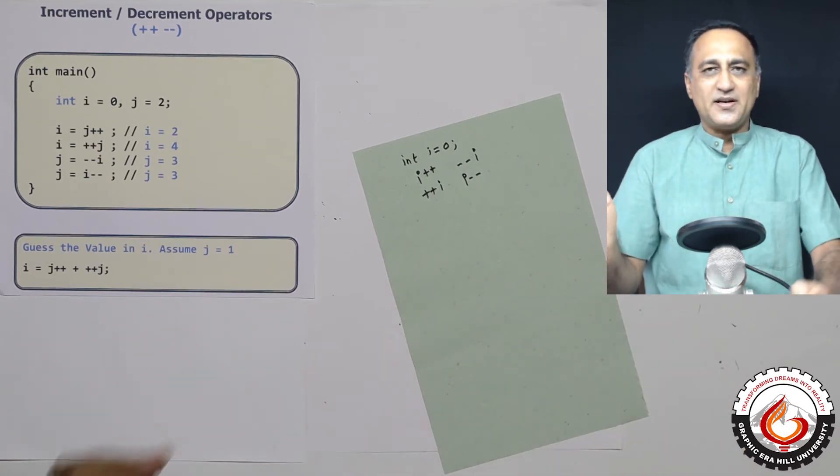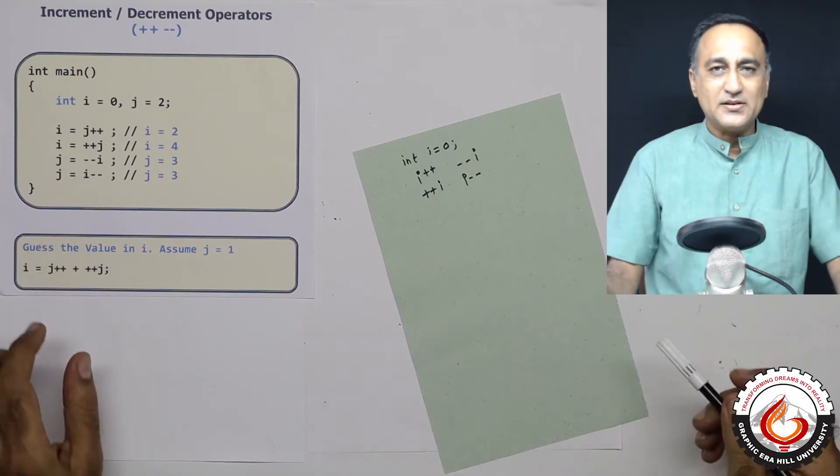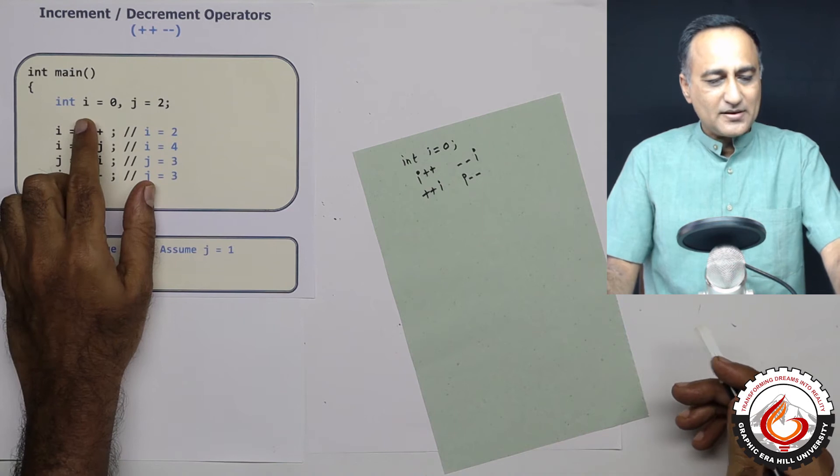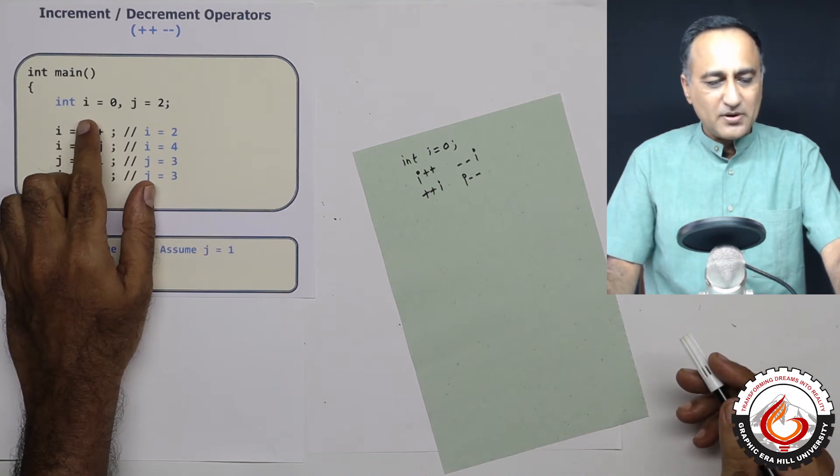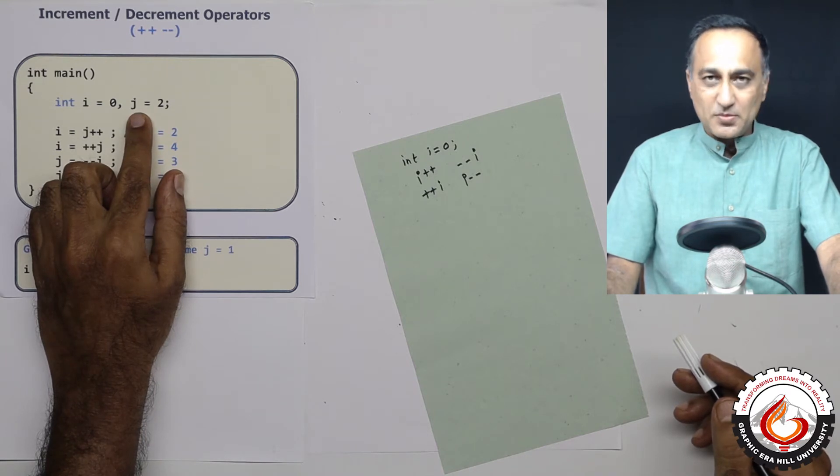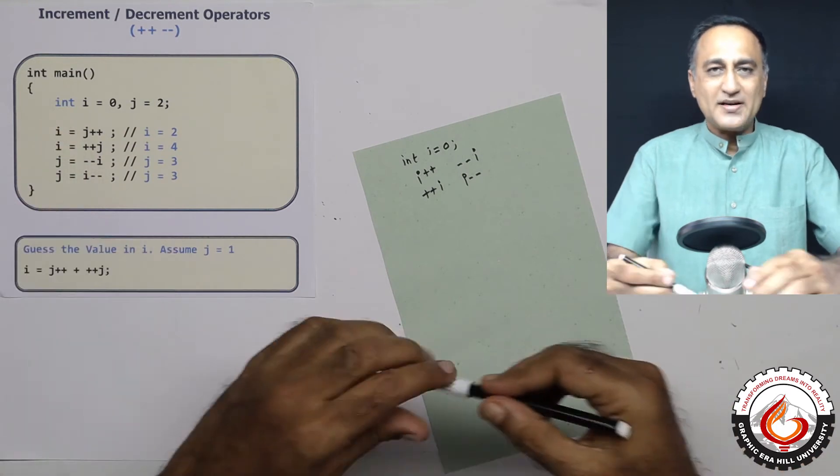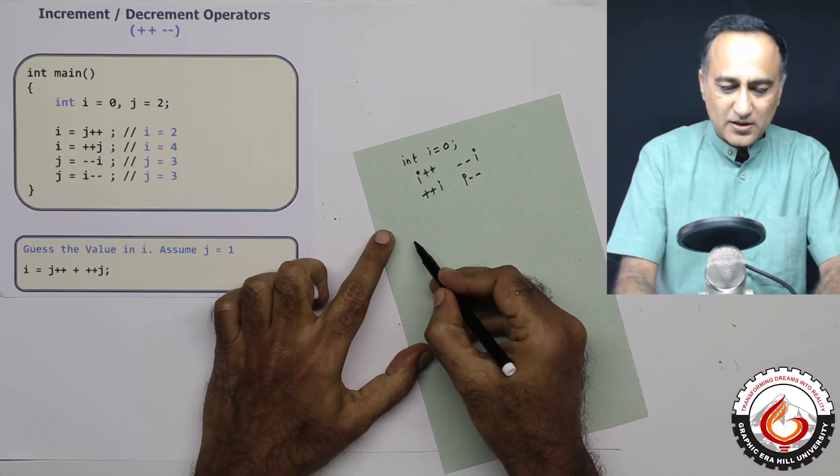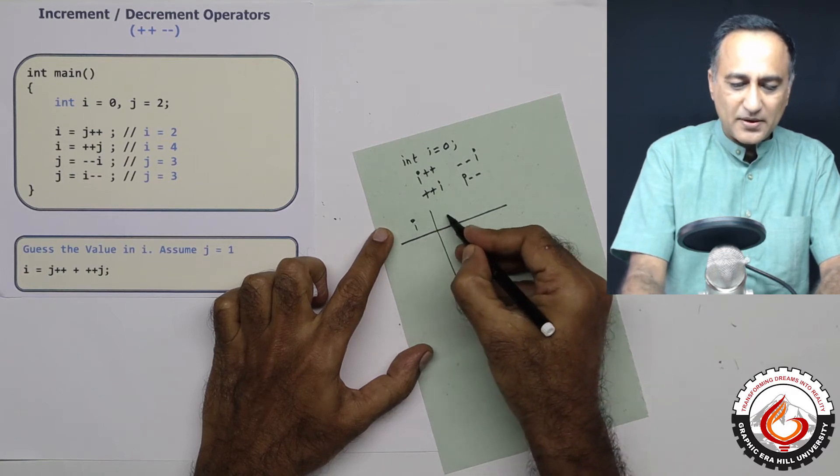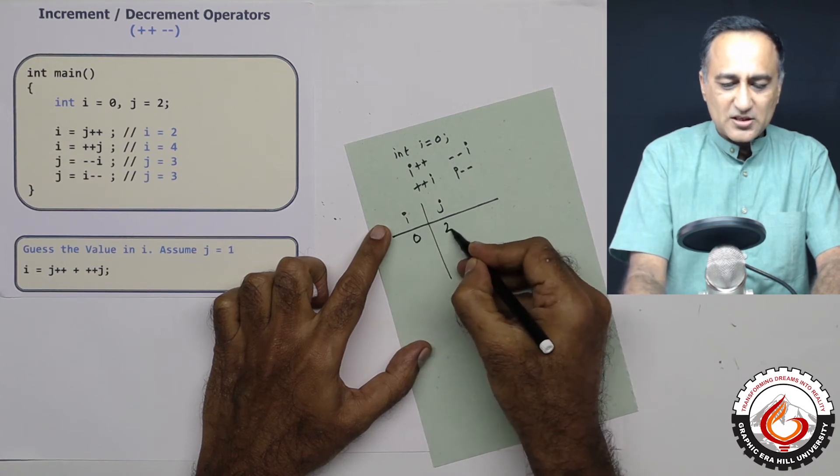The easiest way to understand how increment and decrement operators work is by looking at this code snippet. I've declared an integer variable i equal to 0, and another variable j which is also an integer with initial value 2. To understand this code, I'll draw a table showing the values of i and j. Initially i is 0, j is 2.